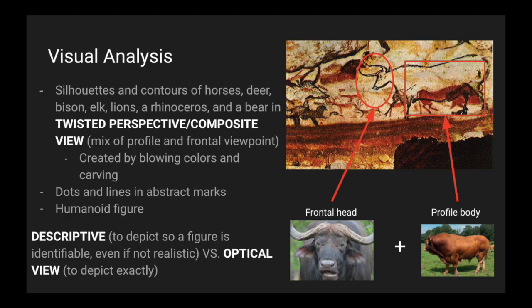For some visual analysis, we can see there are silhouettes and contours of horses, deer, bison, elk, lions, a rhinoceros, and a bear in twisted perspective, also known as composite view, which is a mix of profile and frontal viewpoints. You can see in the two images a frontal head combined with a profile body to make a descriptive view of this bull.